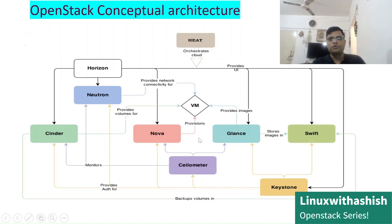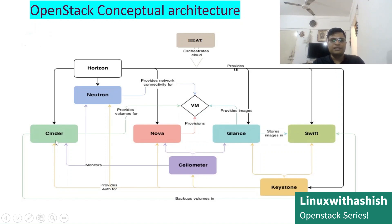Nova then goes to Glance and requests an image. Glance again verifies with Keystone using MariaDB whether the request is legitimate before providing the image. Nova then talks to Cinder for block storage, and Cinder also confirms with Keystone before providing the storage metadata to Nova. If object storage is required, Nova also communicates with Swift. After collecting all the resources, Nova provisions the virtual machine by talking to libvirt on the hypervisor.